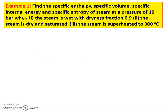Example number 1. Find the specific enthalpy, specific volume, specific internal energy, and specific entropy of steam at a pressure of 10 bar when: (1) the steam is wet with a dryness fraction of 0.9; (2) the steam is dry and saturated; and (3) the steam is superheated to 300 degrees Celsius.